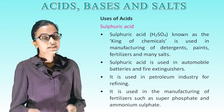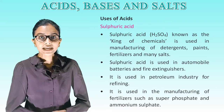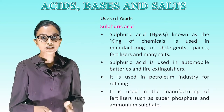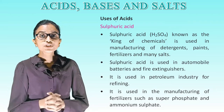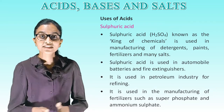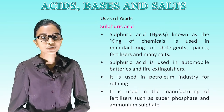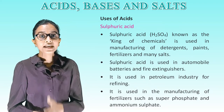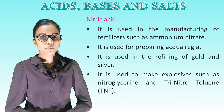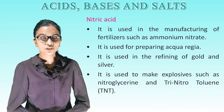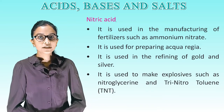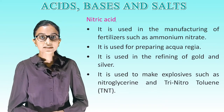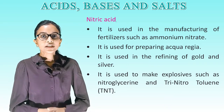Uses of acids. Sulphuric acid (H₂SO₄), known as the king of chemicals, is used in manufacturing of detergents, paints, fertilizers and many salts. Sulphuric acid is used in automobile batteries and fire extinguishers. It is used in the petroleum industry for refining. It is used in the manufacturing of fertilizers such as ammonium nitrate. It is used to prepare aqua regia and in the refining of gold and silver. It is used to make explosives such as nitroglycerin and trinitrotoluene (TNT).